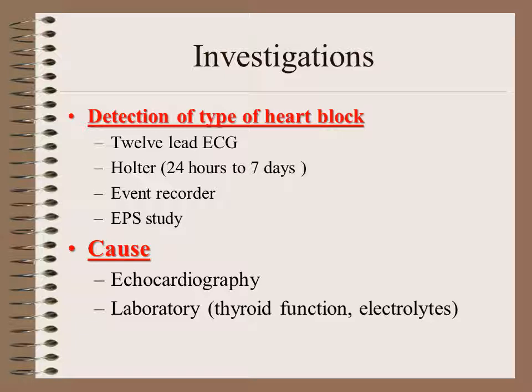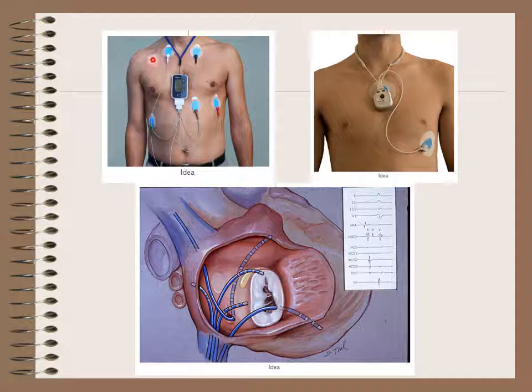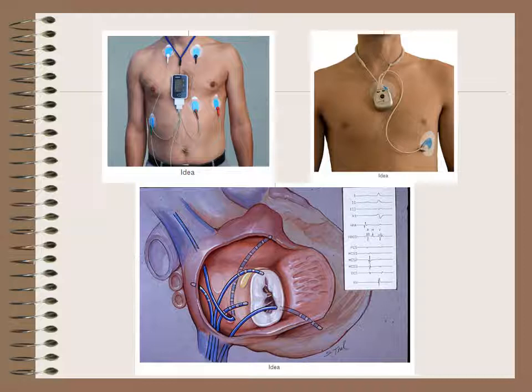We can also discover the cause of bradyarrhythmia and heart block by doing an echocardiography — for example, in degenerative heart disease, where we find calcification around the aortic valve extending to the AV node or the bundle of His, causing blockage. Laboratory tests like thyroid function and electrolyte levels can give hints on the cause. The Holter monitor is a very small device strapped to the patient by five or seven electrodes, recording up to seven days of continuous ECG.